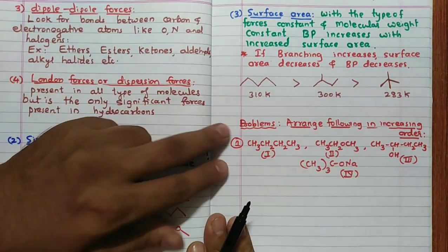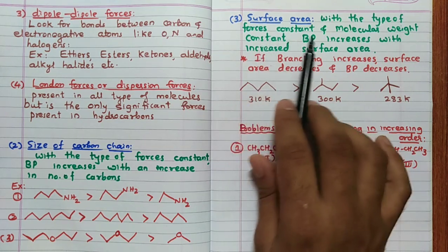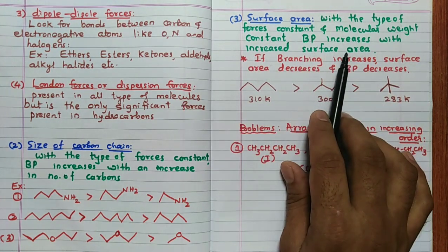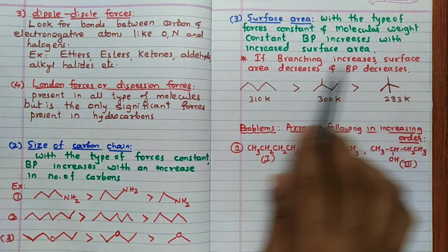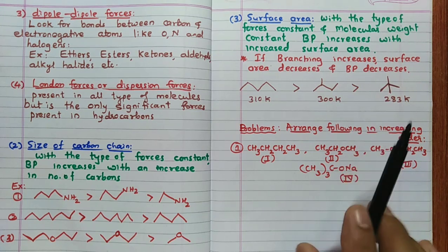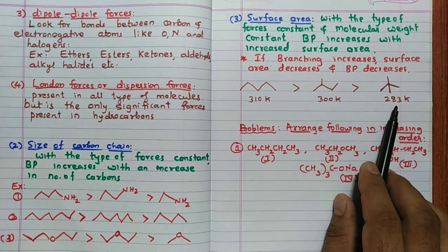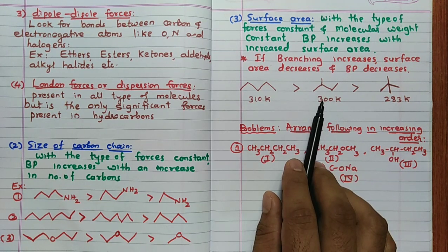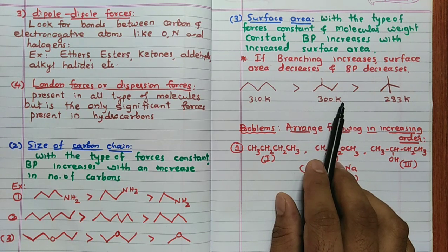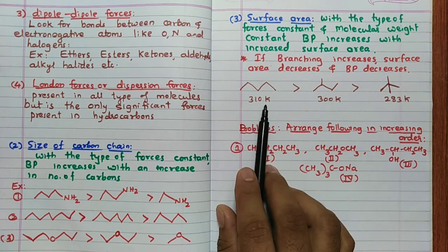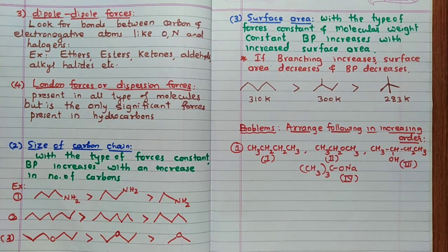The third factor is surface area. With forces and molecular weight constant, boiling point increases with surface area. If branching increases, surface area decreases and boiling point decreases. For example, a tertiary isomer has a boiling point of 283 K, isopentyl is 300 K, and pentane is 310 K — more branching means lower boiling point.